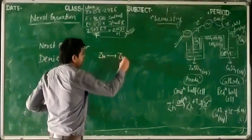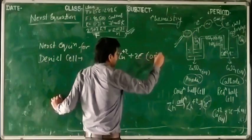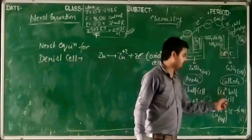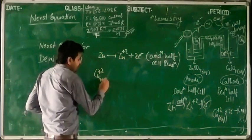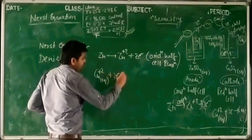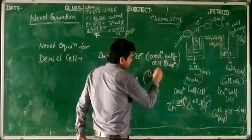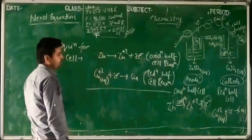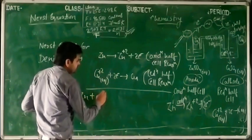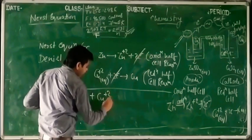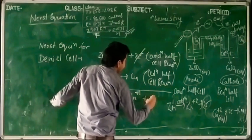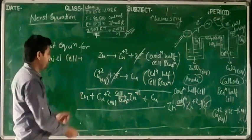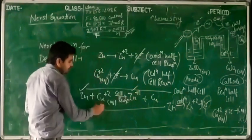The oxidation half-reaction at the anode is: Zn → Zn²⁺ + 2e⁻. The reduction half-reaction at the cathode is: Cu²⁺ + 2e⁻ → Cu. Adding these two equations gives the overall cell reaction, which is a redox reaction involving oxidation of Zn to Zn²⁺ and reduction of Cu²⁺ to Cu.